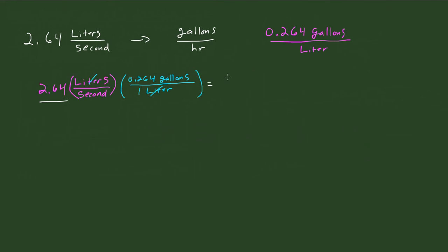So therefore, this would be 0.697, now we have gallons, remember, because liters canceled out, 0.697 gallons per second.